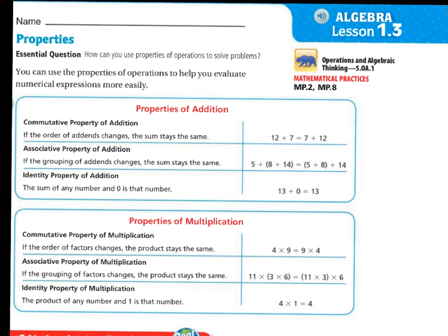The associative property of addition. If the grouping of addends changes, the sum stays the same. So with this one you have 5 plus and then in parentheses you have 8 plus 14. On this one they put the parentheses over the 5 plus the 8 and then you have the plus 14. So even though the parentheses change, the problem is still going to be the same.